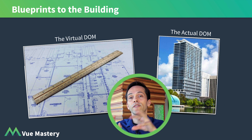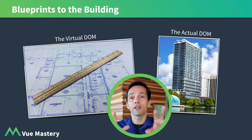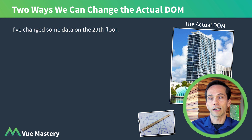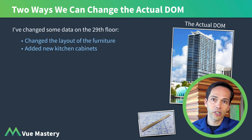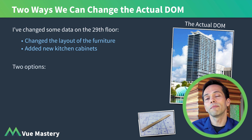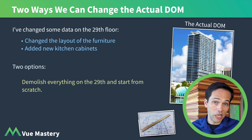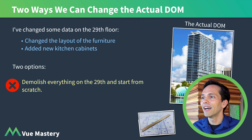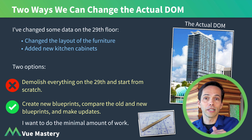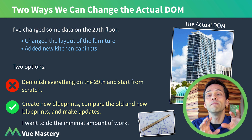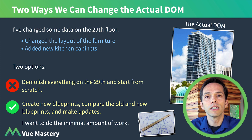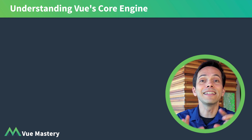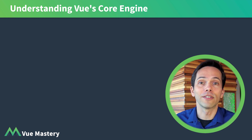An effective way of thinking about the virtual DOM versus the actual DOM is blueprints versus the actual building. Let's say I've changed some data on the 29th floor — I've changed the layout of my furniture and added some kitchen cabinets. There are two ways I can make these changes: I can demolish everything on the 29th floor and rebuild it from scratch, or I can create new blueprints, compare the old and the new, and make updates to do the minimal amount of work. This is kind of how the virtual DOM works, and Vue 3 has become even more efficient at making these updates quickly — something you'll learn all about in this course.